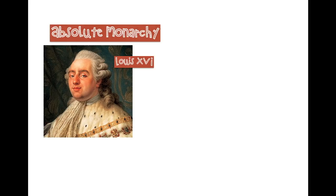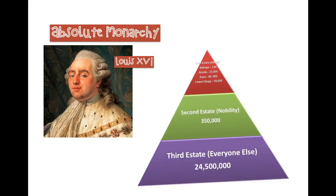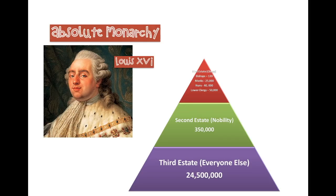Some things we need to know about the French Revolution: under France it was an absolute monarchy, and at the time of the revolution it was ruled by Louis XVI. France was divided into what were called three estates, or three classes. At the top was the first estate, which was made up of the clergy, or the church, and they made up about one percent of the population.